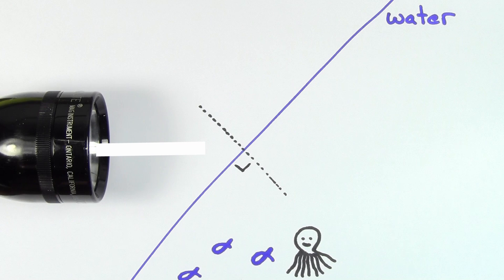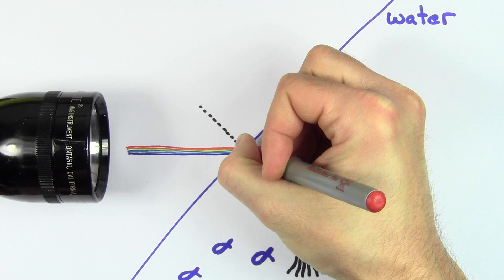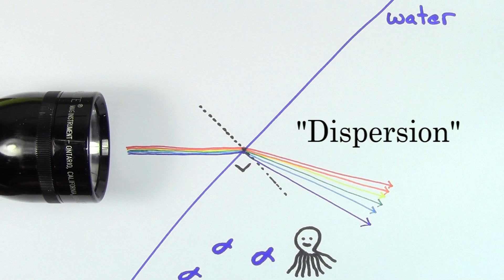But here's the interesting thing. When you send in white light composed of all visible wavelengths, the colors will disperse and get separated from each other. We call this separation of light dispersion.